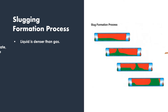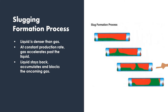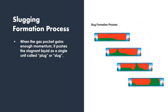But gas being lighter, it accelerates faster, it accelerates past the liquid, and then liquid stays back, accumulates, and then blocks the oncoming gas. This gives rise to Taylor bubbles, and the Taylor bubble, when it expands, tries to push the accumulated liquid as one block, and that's how a slug is formed.